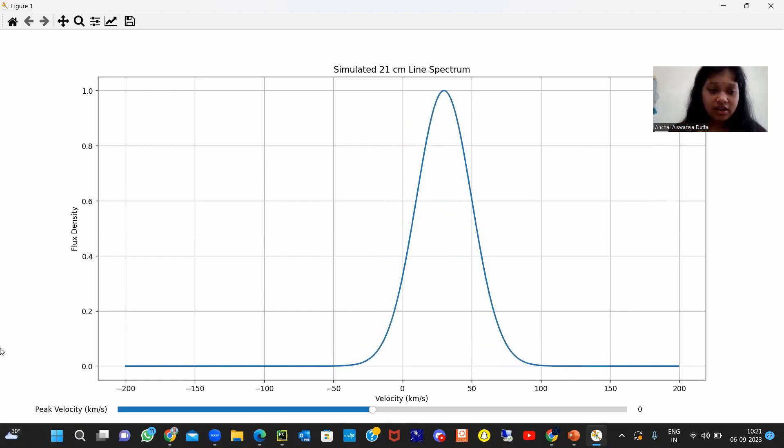The central feature of this plot is the spectral line associated with the 21 centimeter line. Here it is called the slider widget. I can change the values here. Whatever I change, it will go accordingly. It is going automatically. It is an animated plot.